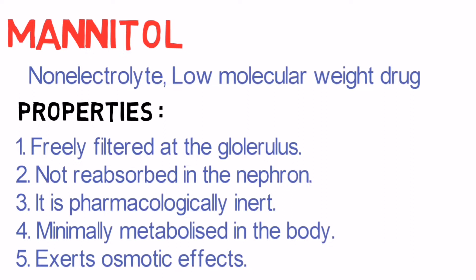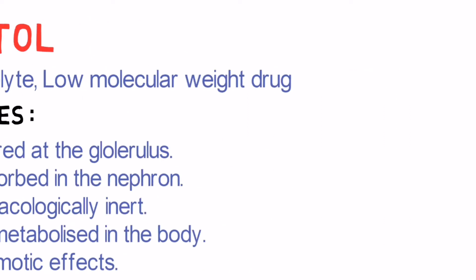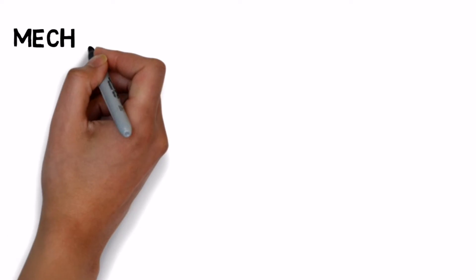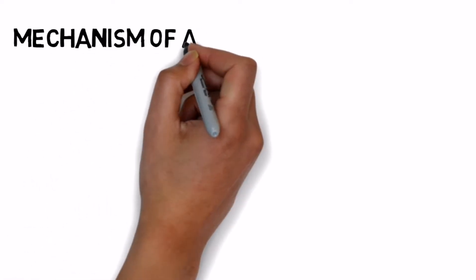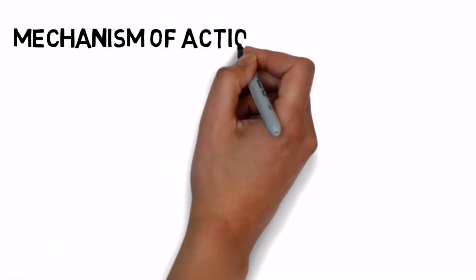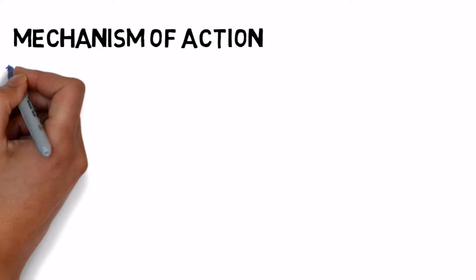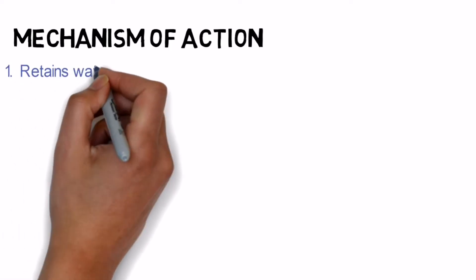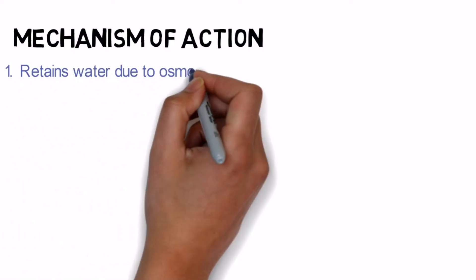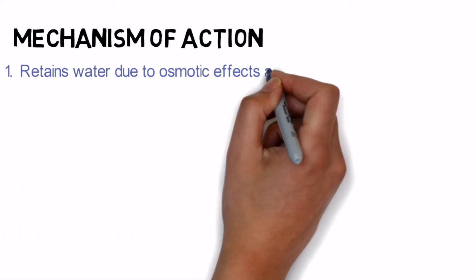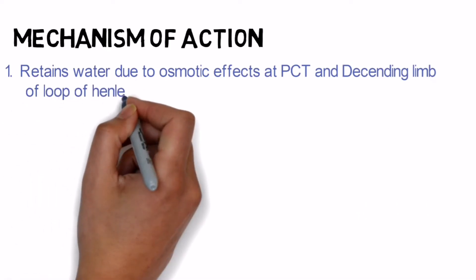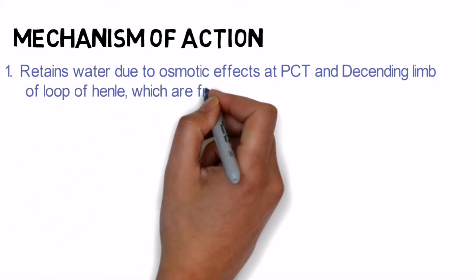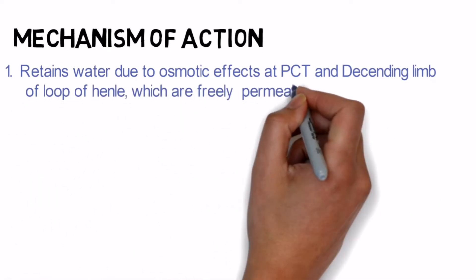Mannitol increases osmolarity where it is present and attracts water. Mechanism of action of mannitol: First, it retains water due to osmotic effects at the PCT and the descending limb of the loop of Henle, which are freely permeable to water.